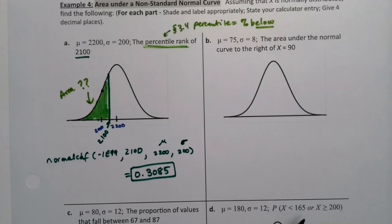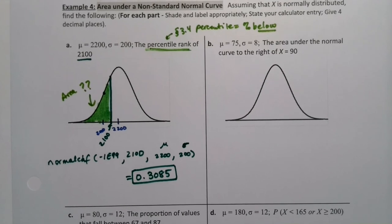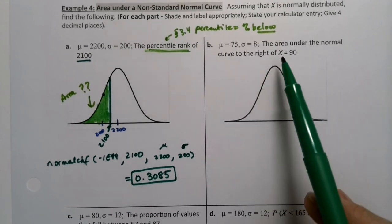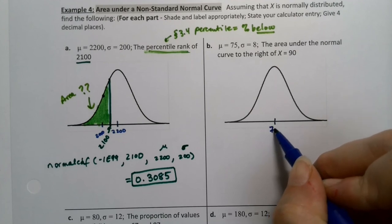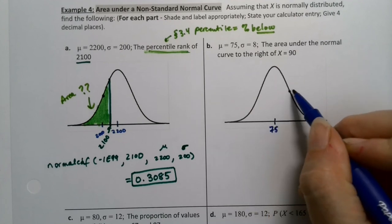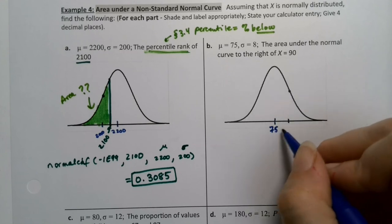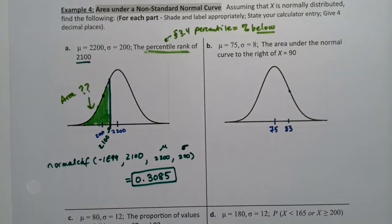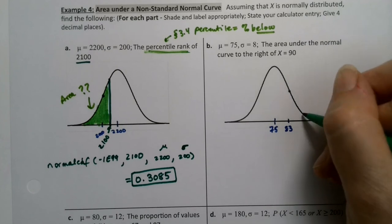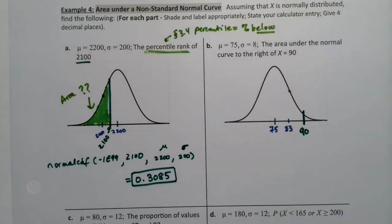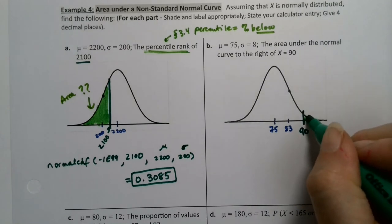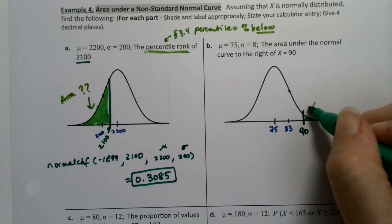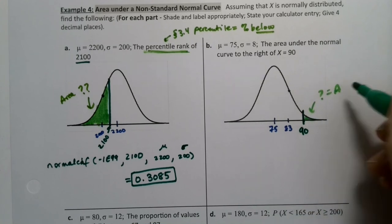So let's do another one. I want the area under the normal curve to the right of X equals 90. Okay. So the mean was 75, which is right here. The standard deviation, the inflection points 8 away from that, which would be 83. 90 is actually almost two standard deviations away. It's kind of over here. So here's 90. And I want this area under that curve, but to the right of 90. So I want that little bit right there. What's that area?